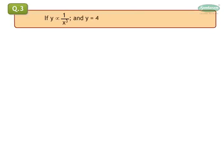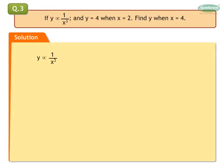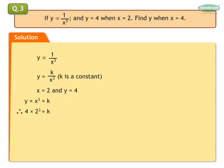Question 3: If Y is inversely proportional to 1 upon X cube and Y is equal to 4 when X is equal to 2, find Y when X is equal to 4. Solution: Y is inversely proportional to 1 upon X cube, written symbolically. Hence, we get Y is equal to K upon X cube, where K is a constant. By substituting X as 2 and Y as 4, we get Y into X cube is equal to K. Therefore, 4 into 2 cube equals K, so 4 into 8 equals K. Therefore, K is equal to 32, giving the equation of variation YX cube is equal to 32.